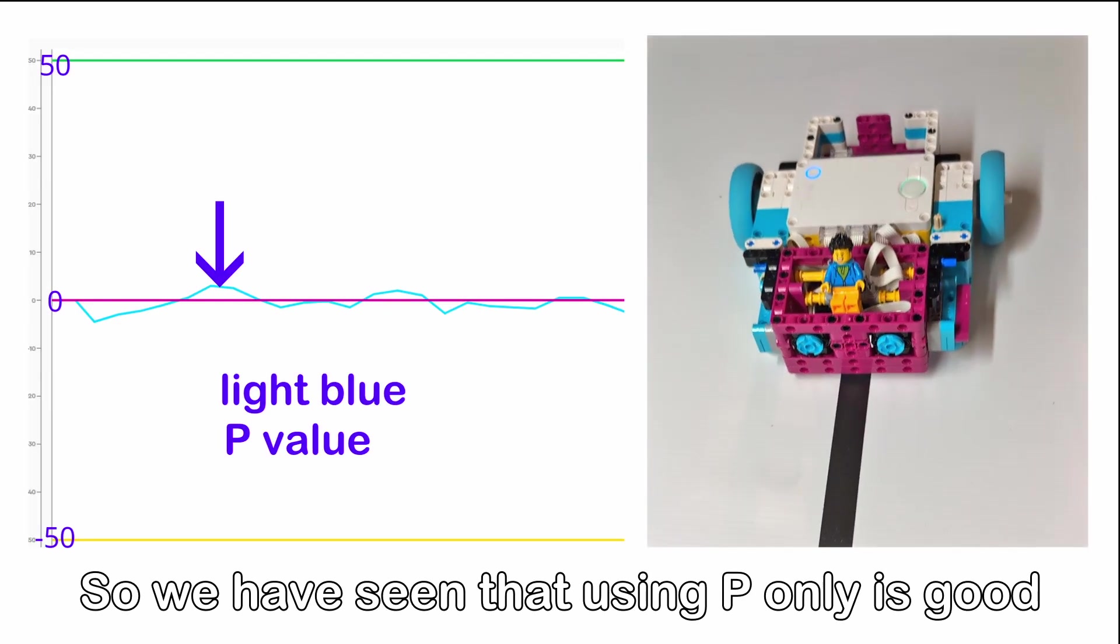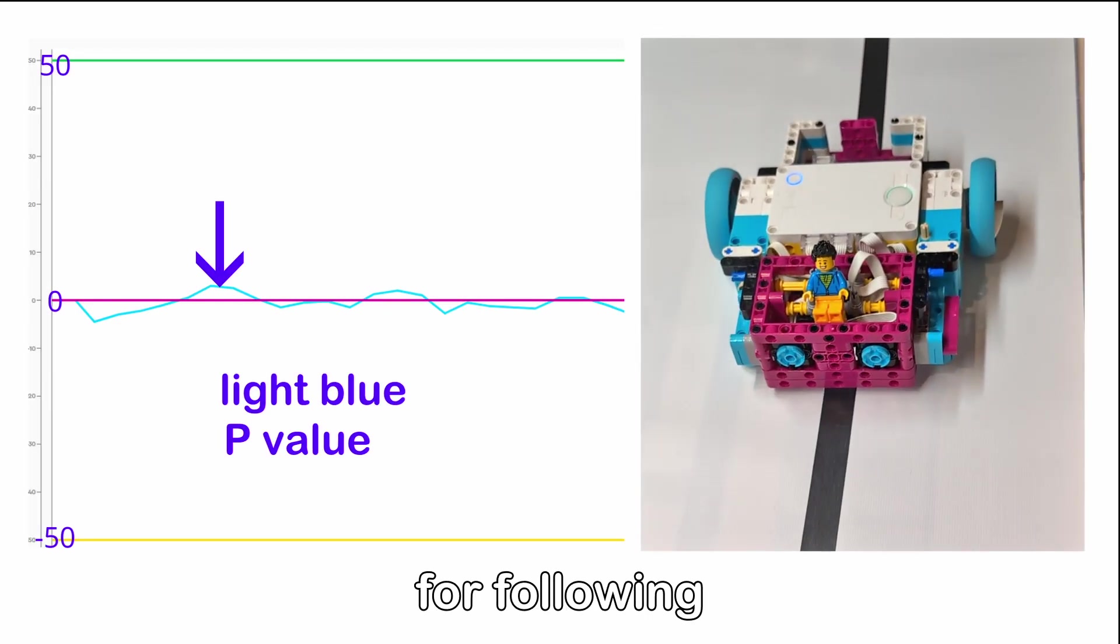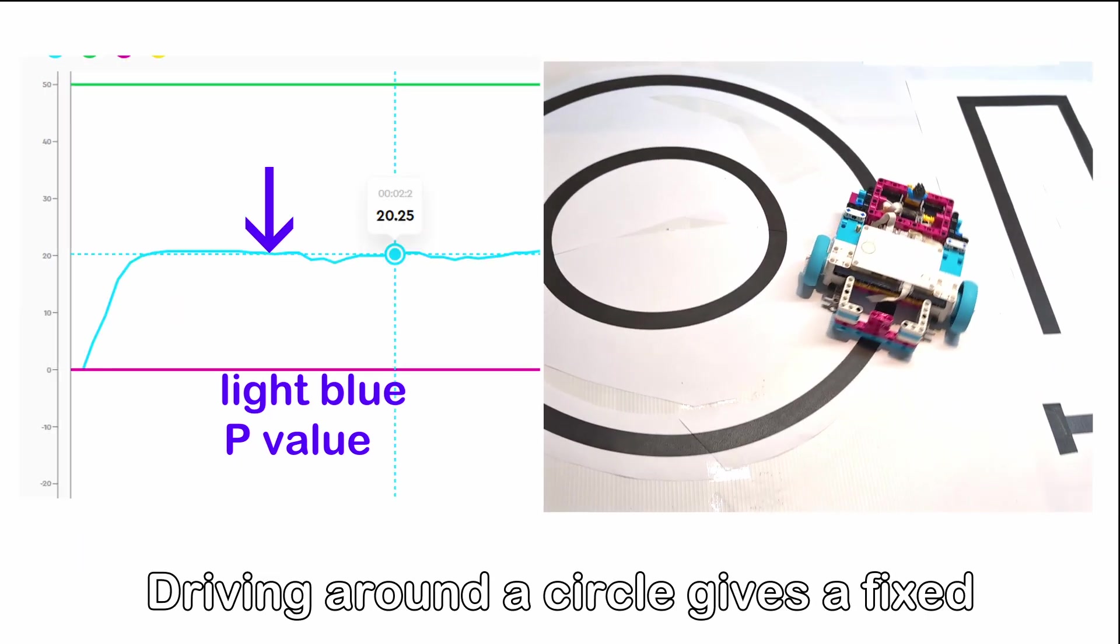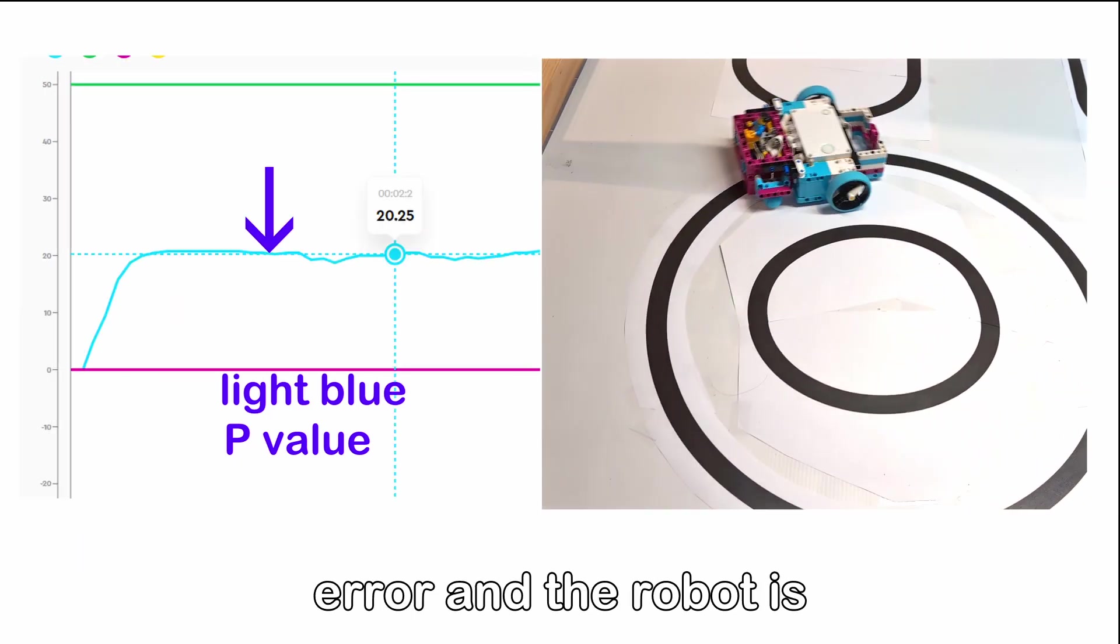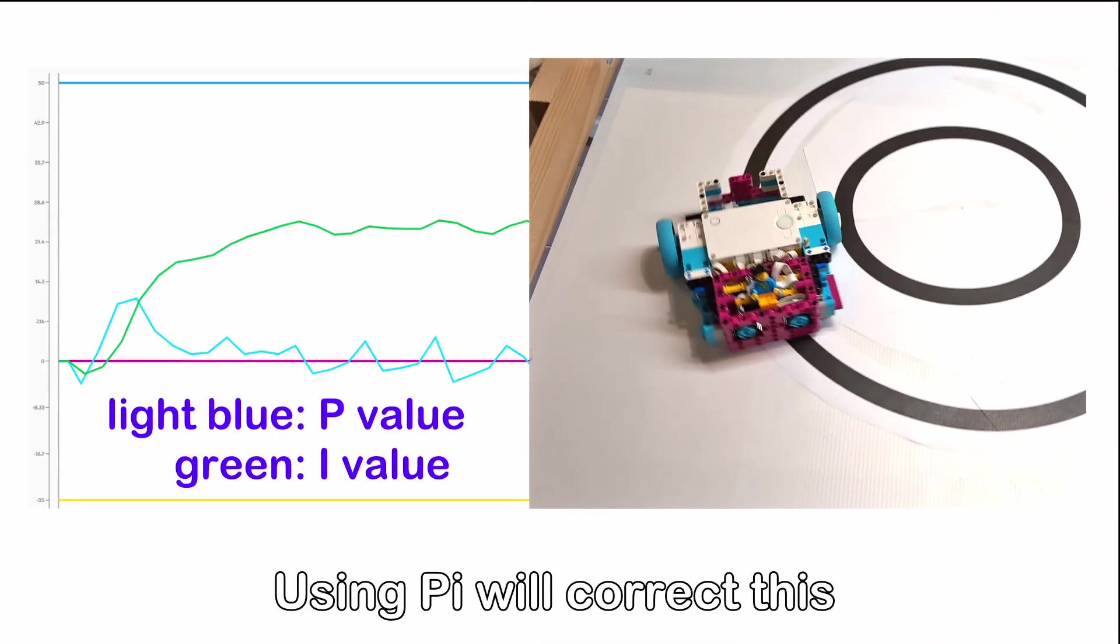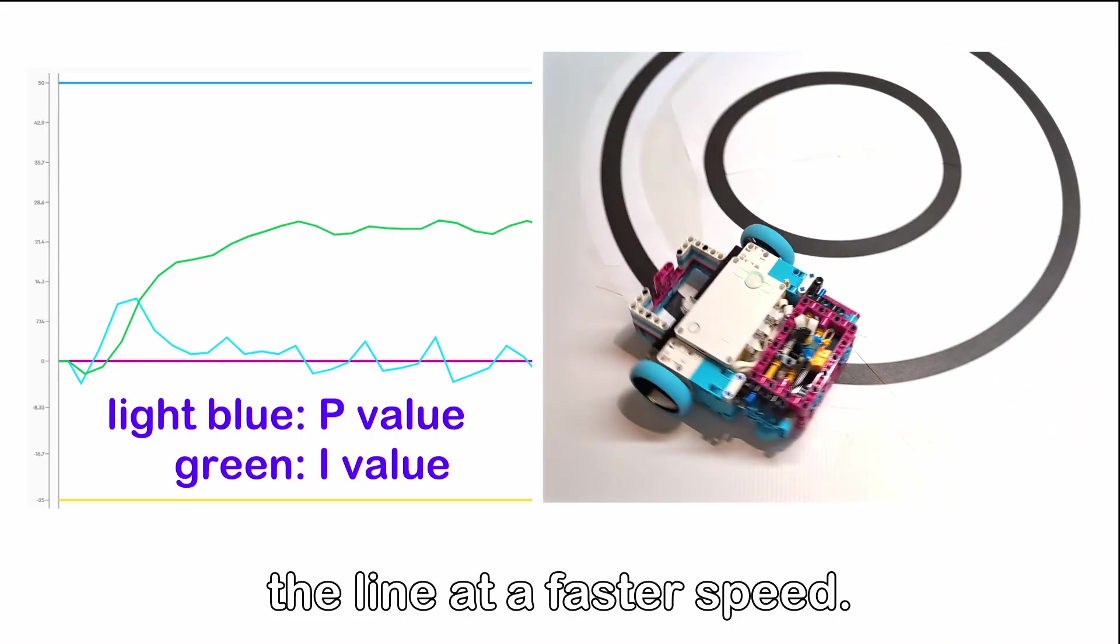So we have seen that using P only is good for following straight lines. The error is always close to 0. Driving around a circle gives a fixed error and the robot is not on the middle of the line. Using PI will correct this so that the robot can follow the line at a faster speed.